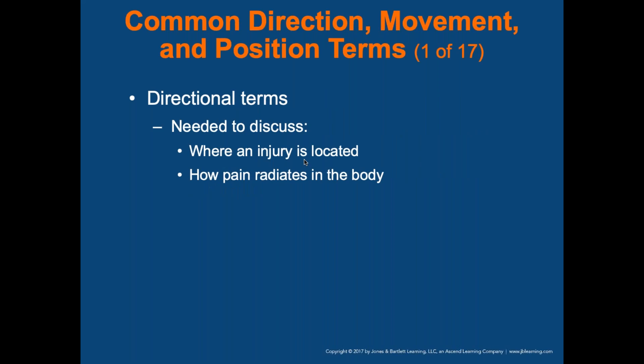Other directional terms describe where an injury is located and how pain radiates. Distal means away from the body, proximal means toward the core. For a tibia injury in the lower leg, it would be distal in comparison to the knee — farther away from the body. The femur is proximal to the knee — closer to the body. The humerus is proximal to the elbow.